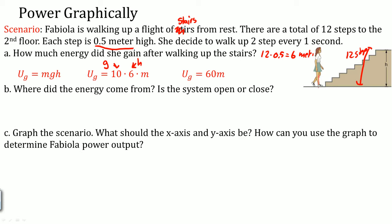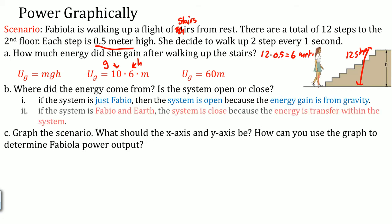Where did the energy come from? Is the system closed or open? It's actually a trick question. There's two ways to answer this. One, if you just think about the system as just Fabiola, you would say the system is actually open because the energy is gained from gravity, which comes from Earth, which is outside of Fabiola. However, if you say that the system is Fabiola and Earth, you would say the system is closed because the energy is transferred within the system from Fabiola to Earth, Earth to Fabiola.